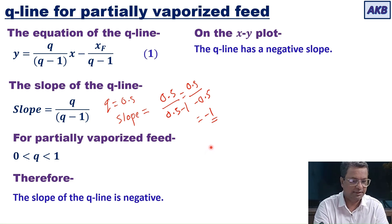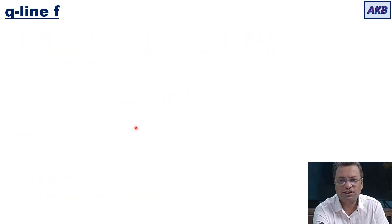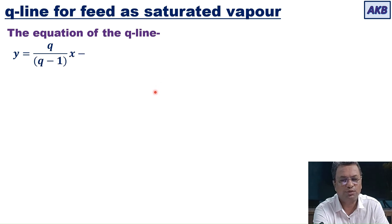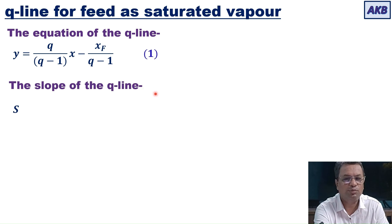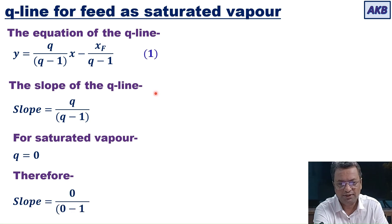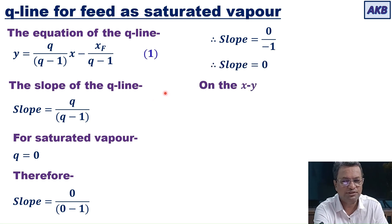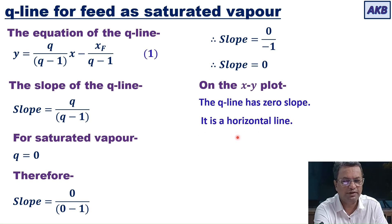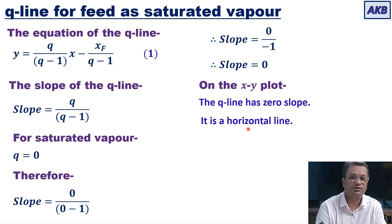For saturated vapor, q equals 0. The slope is 0/(0−1) = 0/(−1) = 0. A line with zero slope is a horizontal line, so for saturated vapor the Q-line is a horizontal line on the x-y plot.